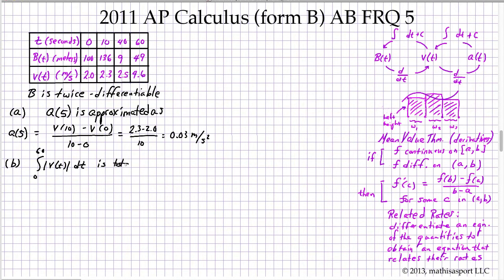Therefore, somewhere for T between 40 and 60, that should be the open interval, we must have V(T) equal to 2 meters per second. And that's for some T equals C.